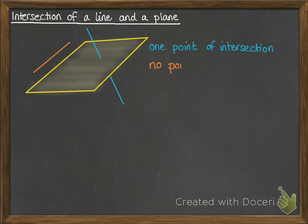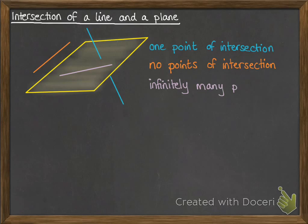We could have a line that runs parallel to the plane, so there are no points of intersection. We could also have a line that's actually on the plane, so there are infinitely many points of intersection.